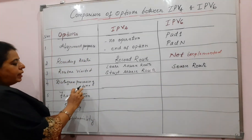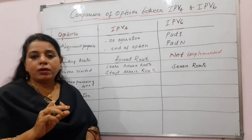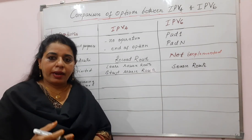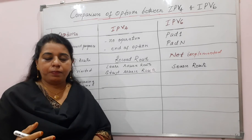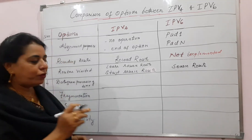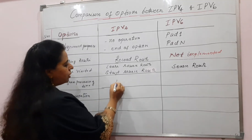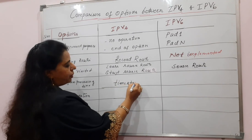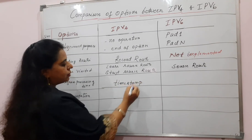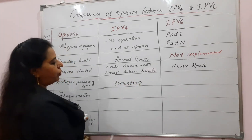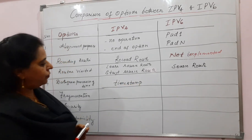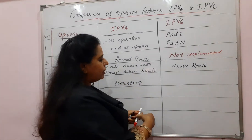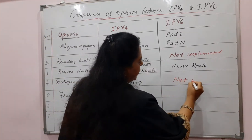Datagram processing time — the time at which the datagram gets processed at every router. For that, in IPv4 we have the option called Timestamp. Just go through the video lecture on options of IPv4 for the timestamp option. In IPv6, it is not implemented.